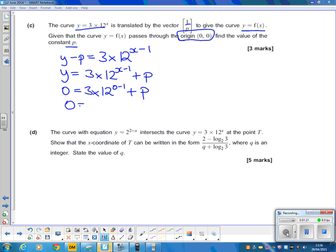So 0 equals 3 times 12 to the power of negative 1 plus p. You can either evaluate that in your calculator, or you realize that's 3 over 12, which is a quarter, plus p. So p is negative a quarter.